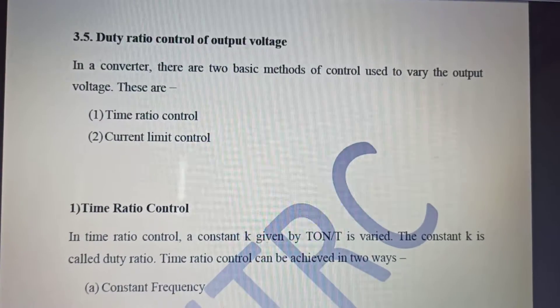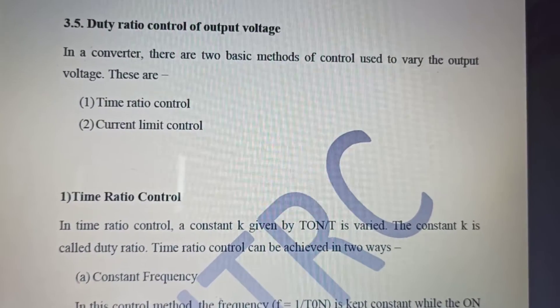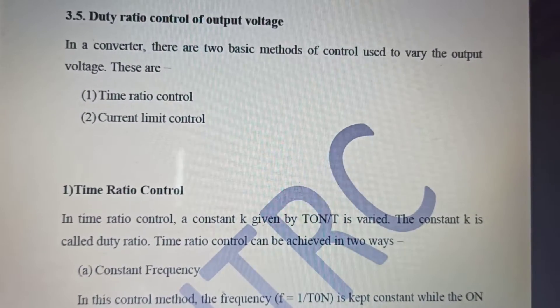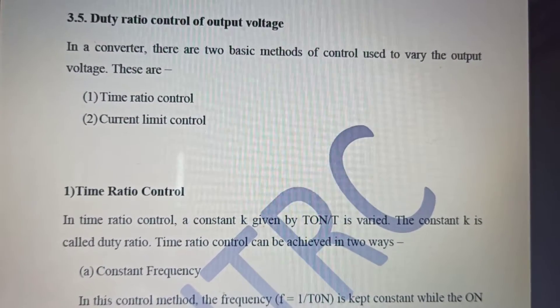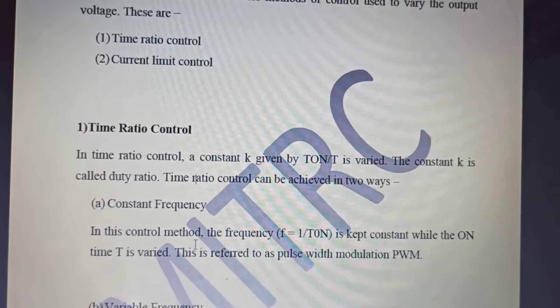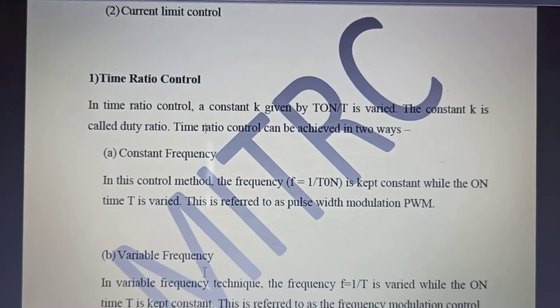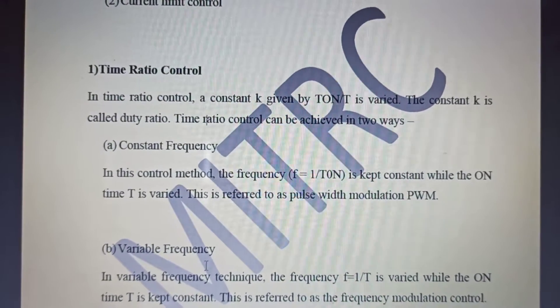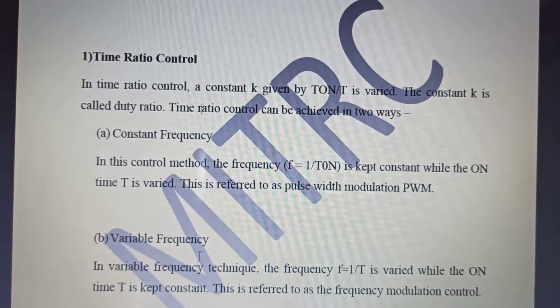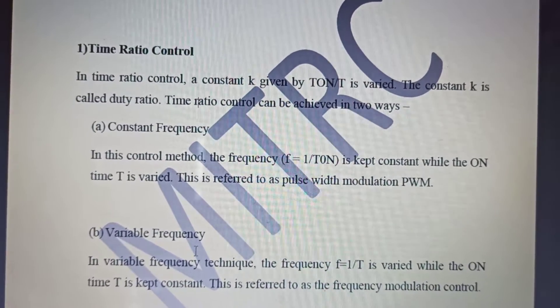Now coming back to duty ratio control of output voltage, the first control that is very easy and interesting to follow is the time ratio control. What is time ratio control? The on-time is controlled. That is, the duty ratio D, which gives T_on by T, is varied and this helps in the control of the duty ratio.